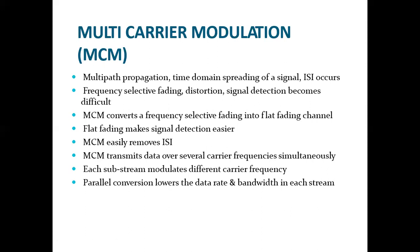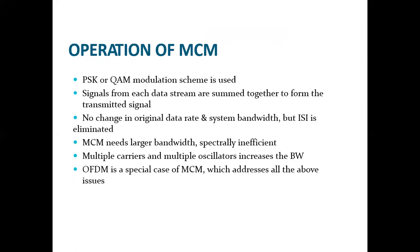Multi-carrier modulation converts this frequency selective fading into a flat fading channel. Flat fading makes signal detection easier. Therefore MCM, that is multi-carrier modulation, easily removes inter-symbol interference. Multi-carrier modulation transmits data over several carrier frequencies simultaneously, and each substream modulates a different carrier frequency. The parallel conversion lowers the data rate and bandwidth in each substream.